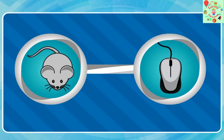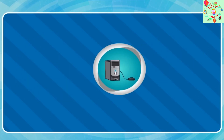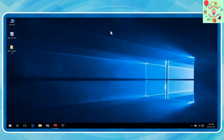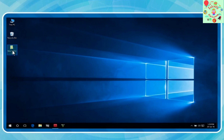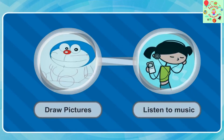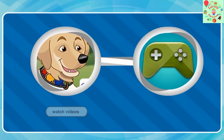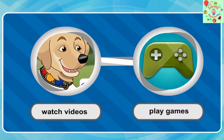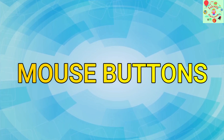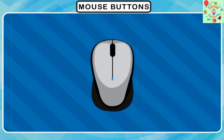The computer mouse has two or three buttons on it and a tail which is fixed to the CPU. It helps to point and select any item on the monitor. It is also used to type text, drop pictures, listen to music, watch videos, play games, and more.